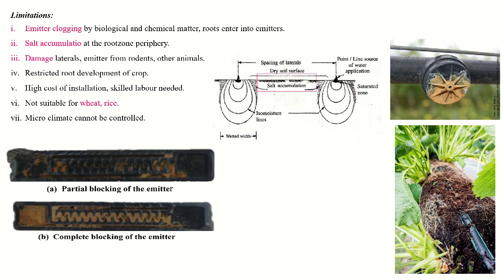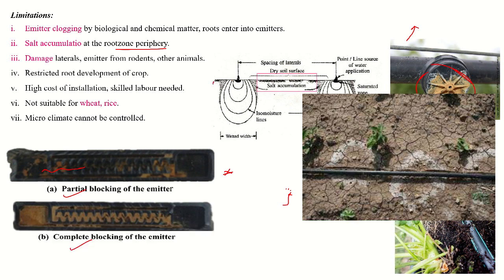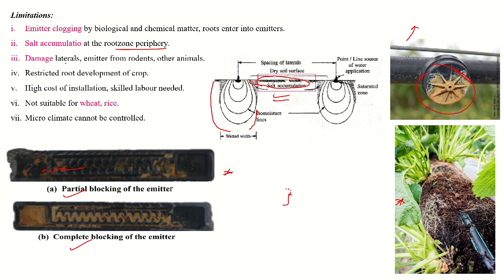The major limitation of the drip irrigation system is clogging of the emitters. If not maintained properly, the emitters — also called drippers — may clog, and roots may penetrate into the holes of the dripper, as shown in the picture. This causes complete or partial blocking of the emitter. Salt accumulation also occurs at the root zone periphery because when water is applied continuously and the wetting pattern increases, salt moves upward and accumulates at the top surface.